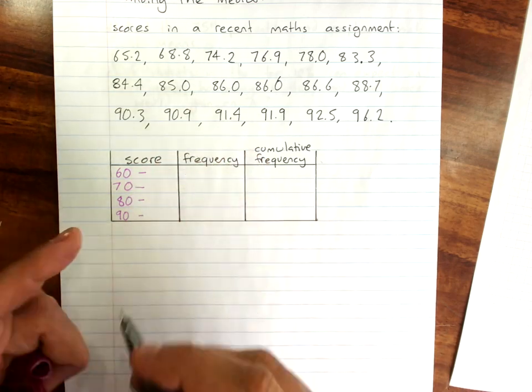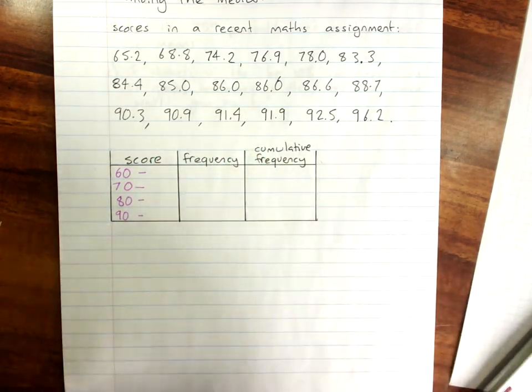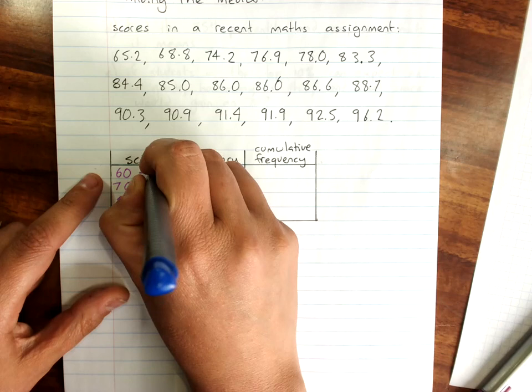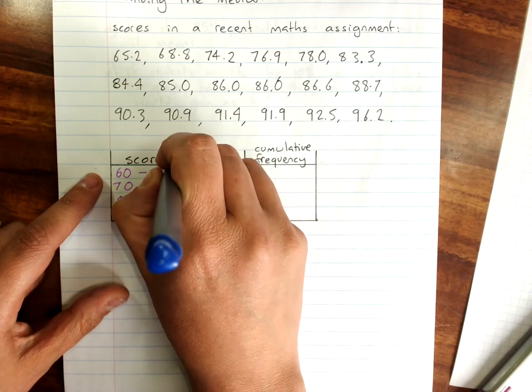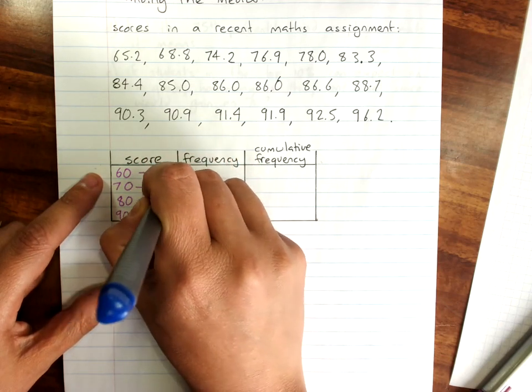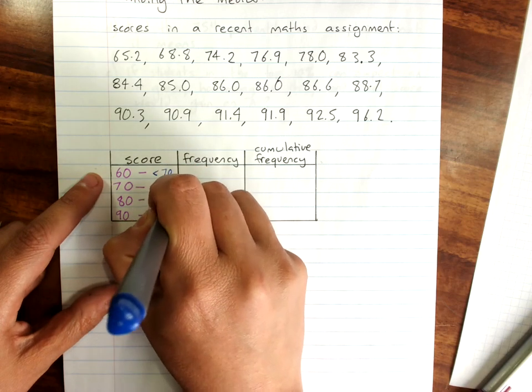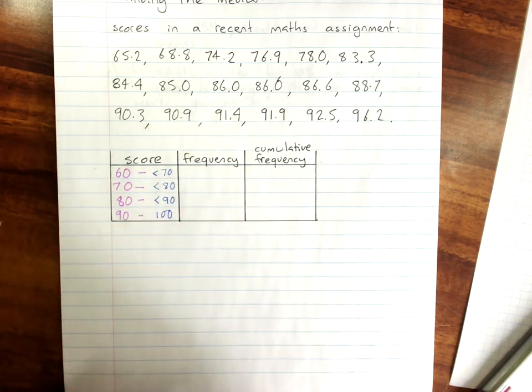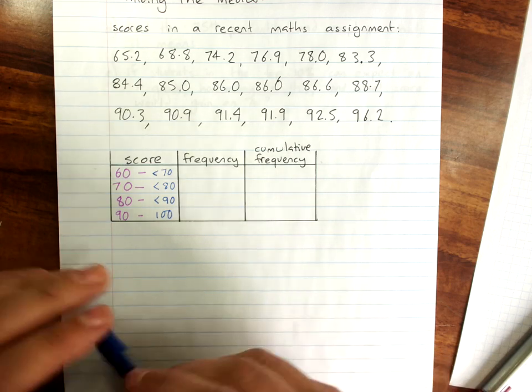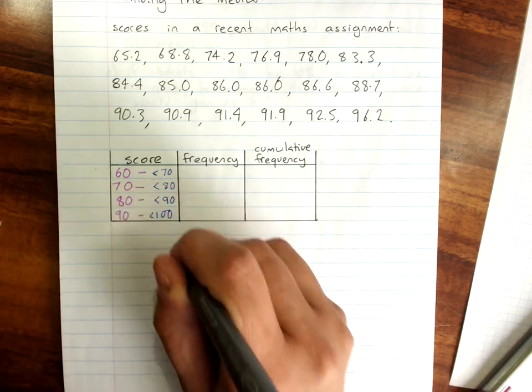If you prefer, you can of course say up to less than 70, up to less than 80, up to less than 90 and up to 100. That would be okay. Technically this would be less than 100 as well.